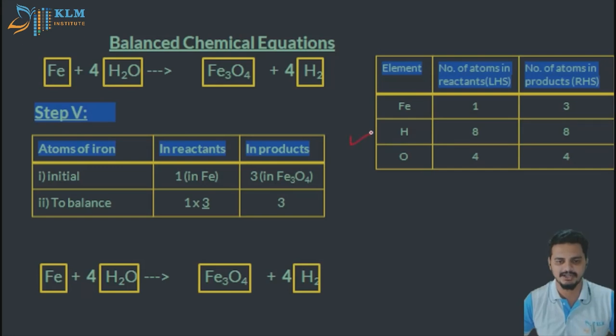We are left with Fe. Fe is iron. So iron in the left-hand side is one, in the right-hand side in the product side there are three iron. So you need to just multiply the reactant side by three. You can add three here, that is multiplication.